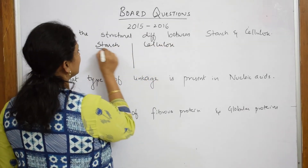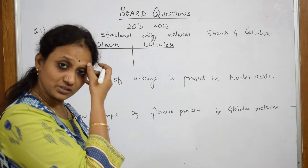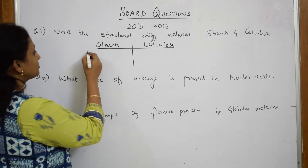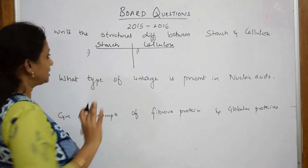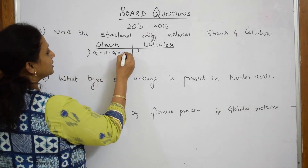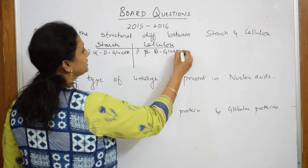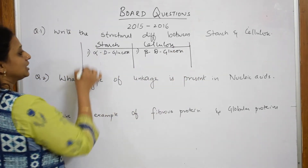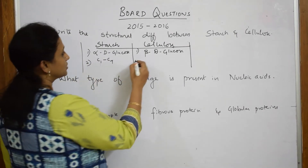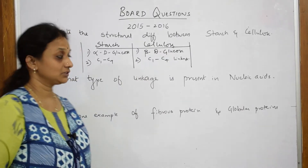Both starch and cellulose are made up of glucose units — almost 4000 glucose units combined one after the other, so it is a polysaccharide. The first important difference: starch is made up of alpha-D glucose units, while cellulose is made up of beta-D glucose units. Both have C1 and C4 linkages.